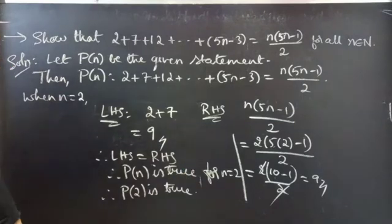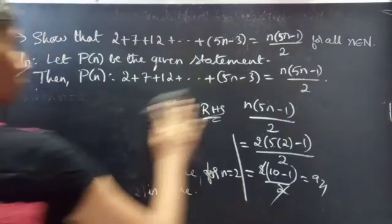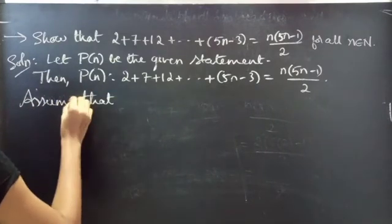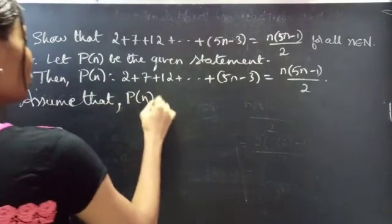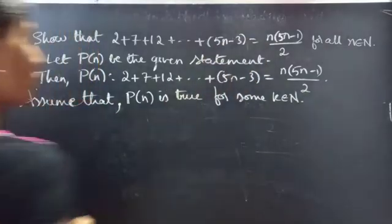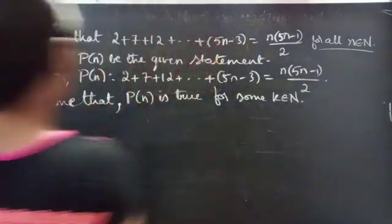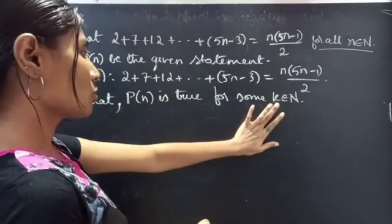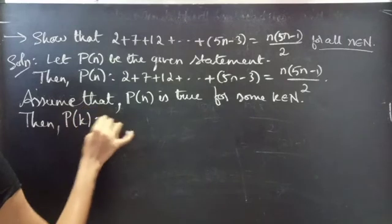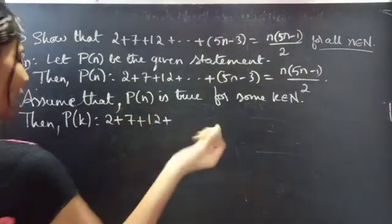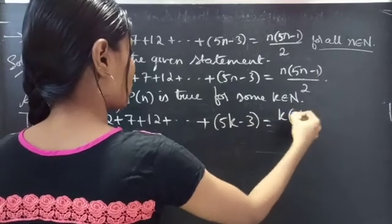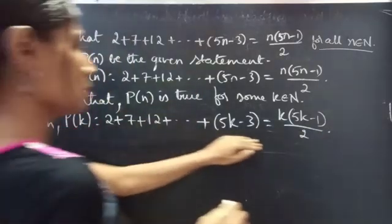Likewise, you can check for n equals 3, 4, 5 and so on. Now, assume that P(n) is true for some k, which belongs to natural numbers. We have given for all n belonging to natural numbers. So we will assume the statement is true for some k belonging to natural numbers. Then P(k) is: 2 plus 7 plus 12 plus ... plus (5k minus 3) equals k times (5k minus 1) by 2. So this statement is assumed to be true.